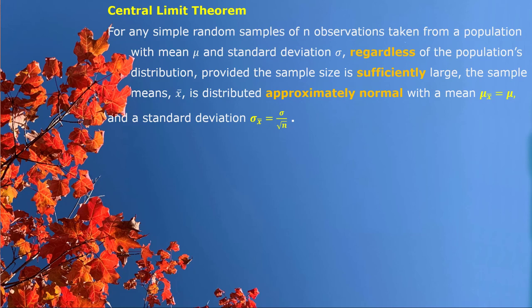We have learned the central limit theorem. For any random simple sample with sample size n taken from a population with average value mu and standard deviation sigma, regardless of the population distribution, provided the sample size is sufficiently large, the sample mean x-bar is distributed approximately normal with the same mean as the population mean and standard deviation equal to sigma divided by square root of n.